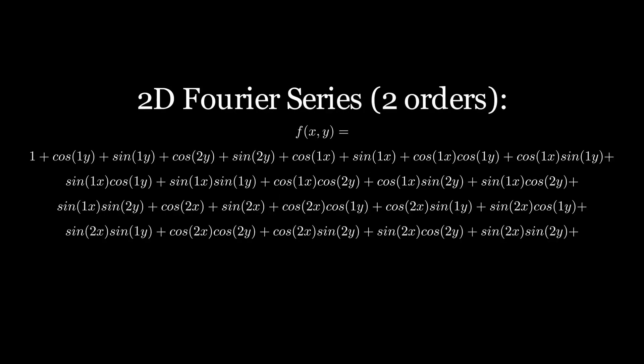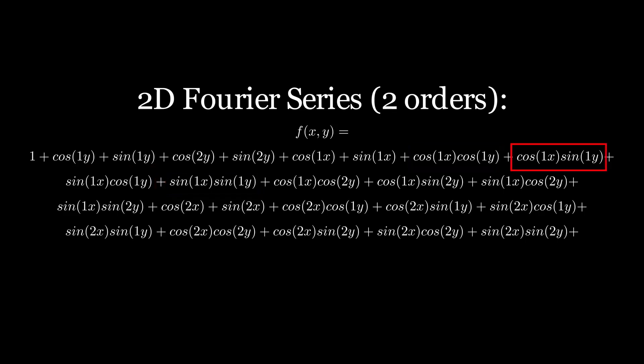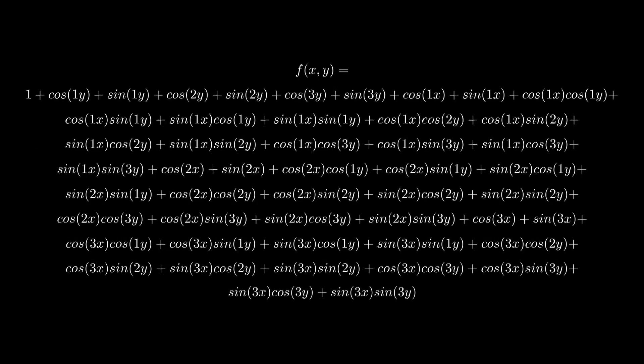Here are the terms for the 2D Fourier series up to two orders. We are now multiplying the x and y terms together, and end up with sine x cosine y, sine x sine y, cosine x cosine y, and cosine x sine y — every combination of sine and cosine in y and x. Not only that, we also have every combination of frequencies — that inner multiplier. So sine 2x times cosine 1y, and so on and so forth. Here's up to three orders. Now four.